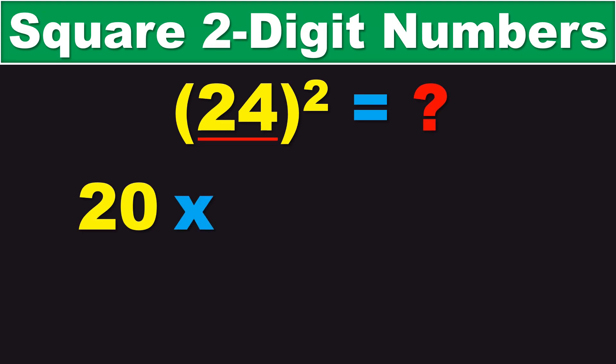The next thing that we have to do is find the difference between these two numbers, 24 and 20. And in this case, 24 minus 20 is 4. And now, what we have to do is add 4 to the original number, 24.